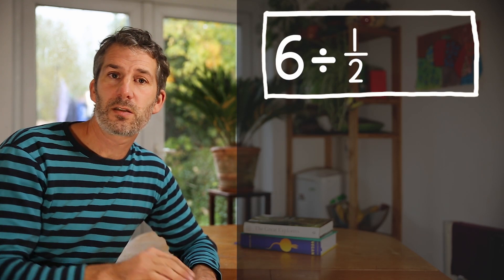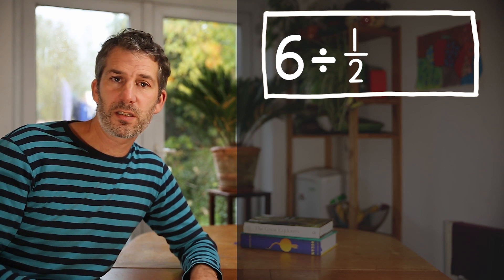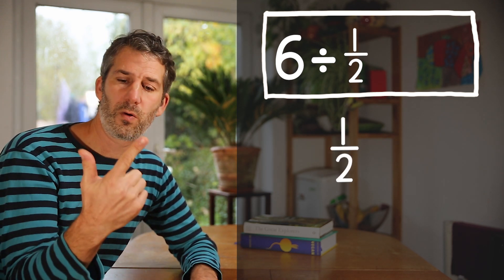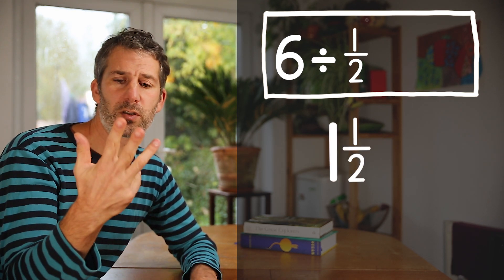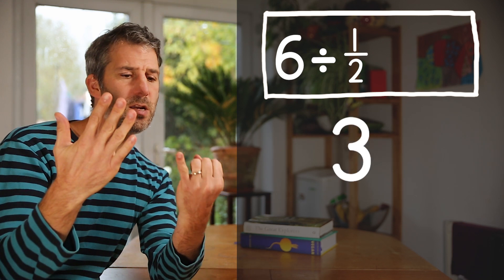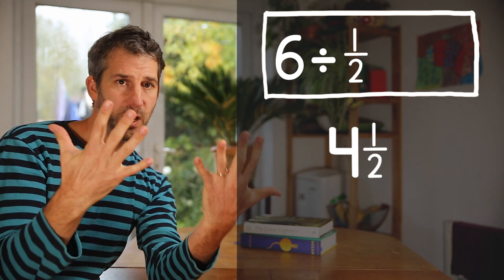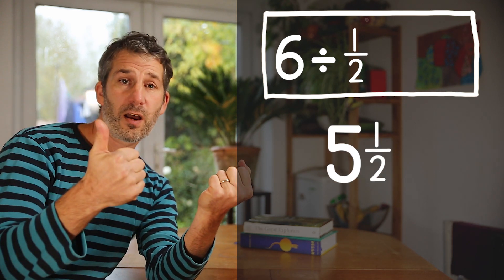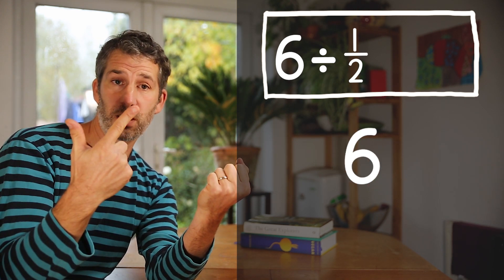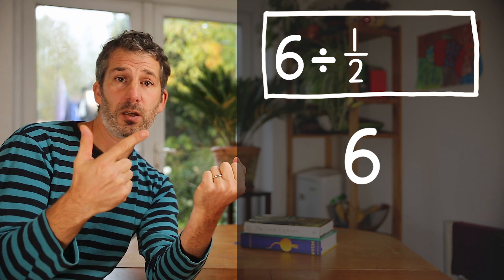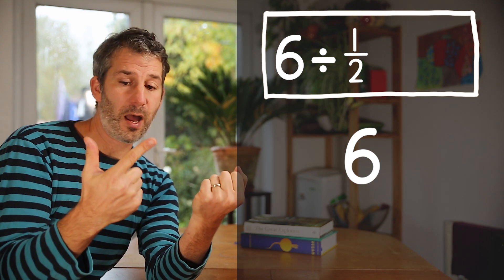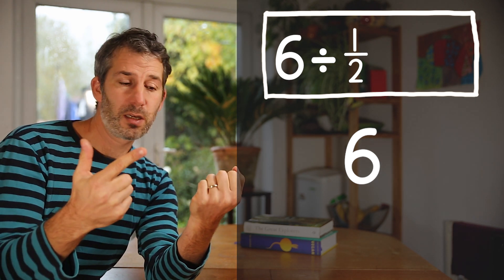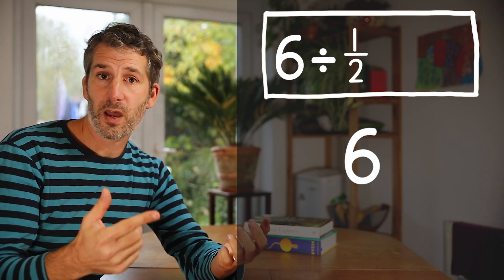If we think about something like 6 divided by a half, we can think of it as how many halves go into 6. So we could count up in halves until we get to 6: half, 1, 1 and a half, 2, 2 and a half, 3, 3 and a half, 4, 4 and a half, 5, 5 and a half, 6. That's 12. So you could fit 12 halves into 6 — 6 divided by a half is 12.